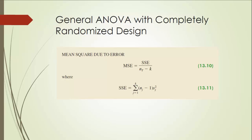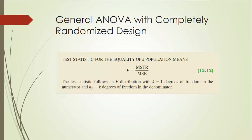Another thing we need in ANOVA analysis is mean squared error, MSE, which is equal to SSE divided by its degree of freedom. SSE is sum of squares due to error — more exactly, the sum of squared errors due to the variation within each treatment. Once we have MSTR and MSE, it is very easy to compute the F-test statistic. In the F-distribution, we have two degrees of freedom: the numerator degree of freedom equals K minus 1, where K is the number of treatments, and the denominator degree of freedom equals N minus K, where N is the total sample size.